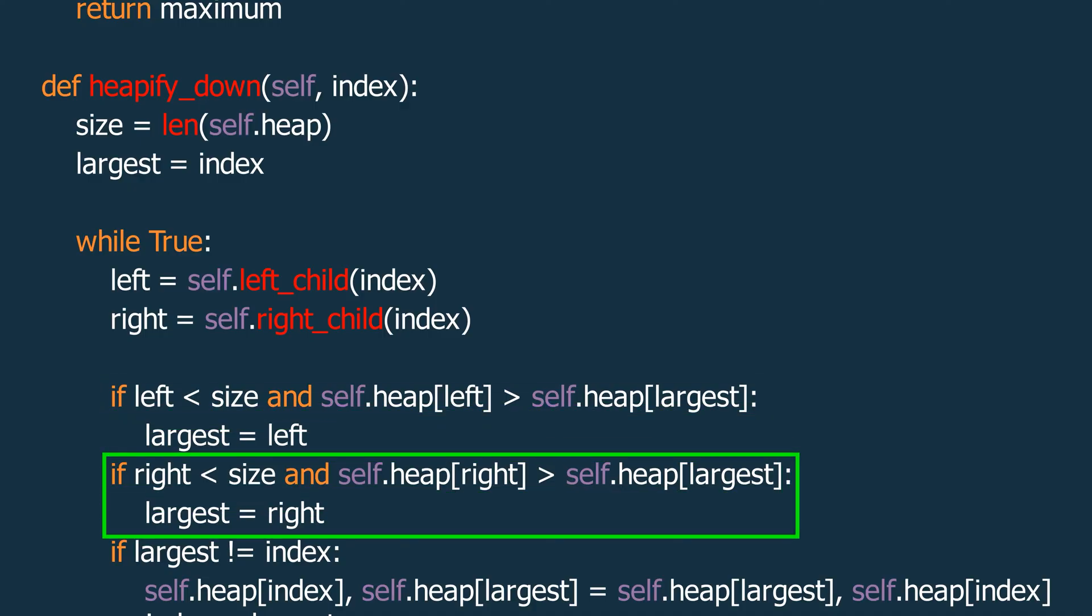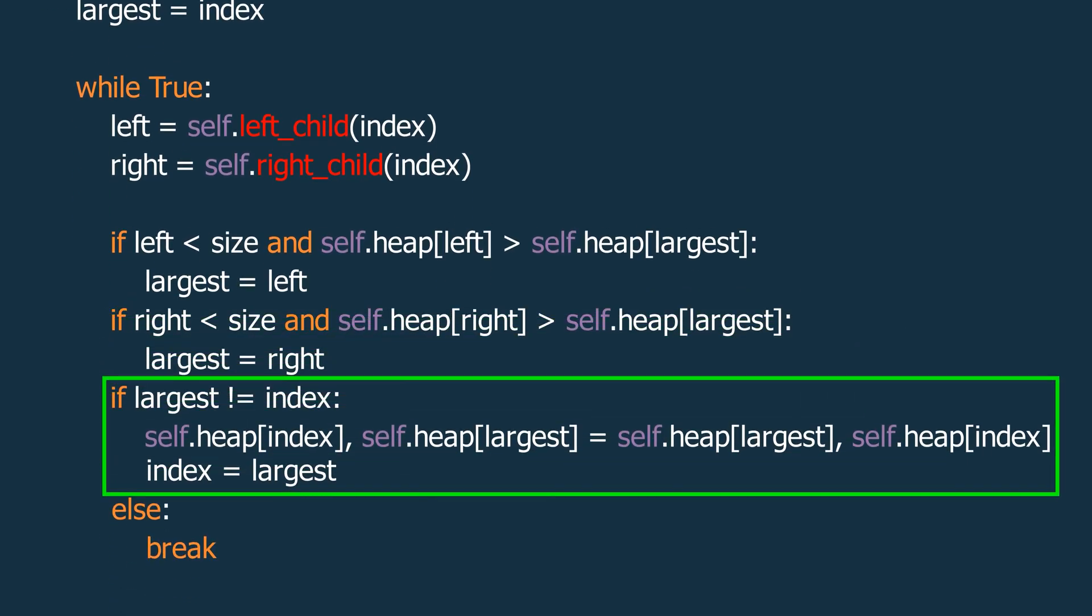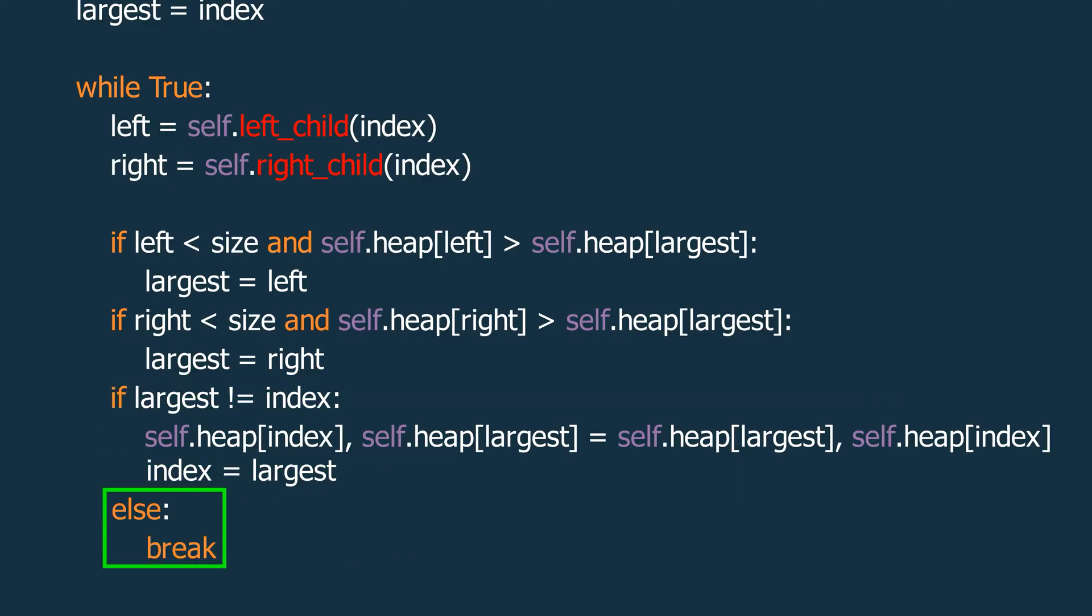We then do a similar check for the right child. If it exists and has a larger value, we update largest to the right child's index. If, after these checks, largest is not equal to the current index, it means we've found a larger child, so we swap the current element with this larger child. We then update index to largest and continue the loop to further adjust the heap. However, if largest is still equal to the current index, it means the element is in the correct position, so we can break out of the loop. This completes the HeapifyDown process.